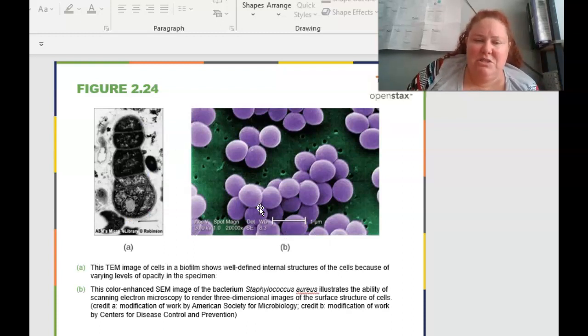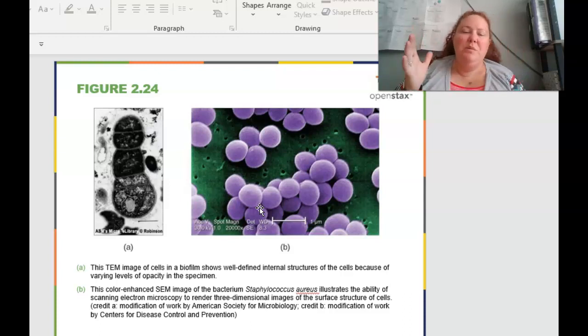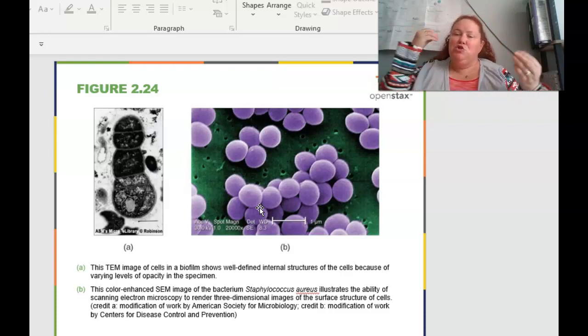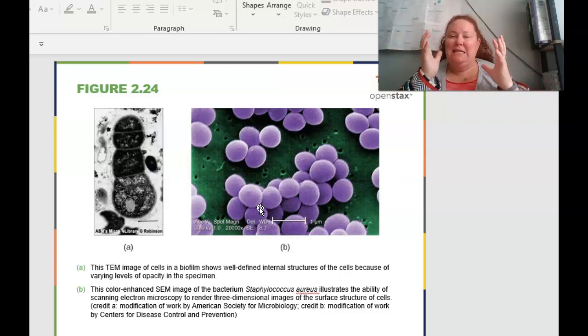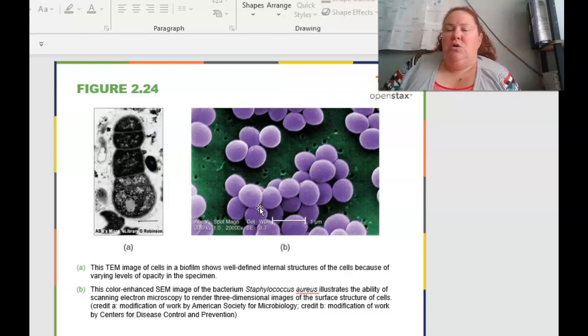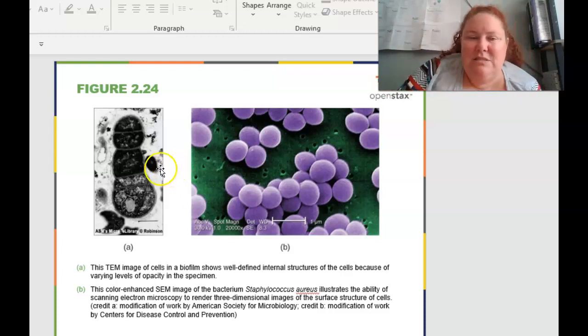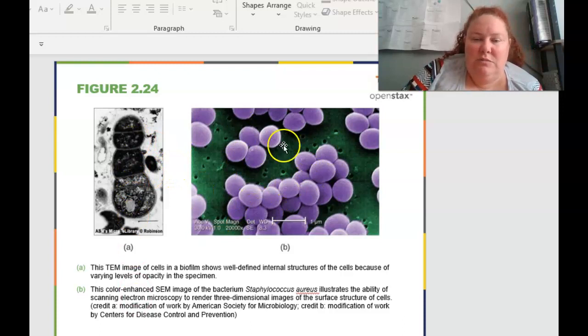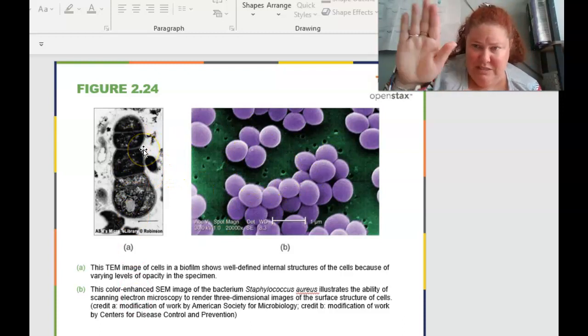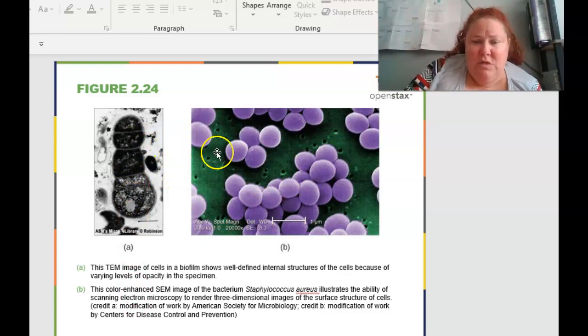So over on the left, this is a transmission electron microscopy image of the cells on the biofilm. And so one of the biggest differences here is you can see the transmission transmits through. So you can see the inner guts of the cell. Where scanning is, it coats the outside. So you see more of the morphology. So that's one of the biggest differences between the two. Scanning goes surface, where transmission transmits through. So anyway, you can see the structures in the transmission where the scanning is going to give you the three-dimensional images.